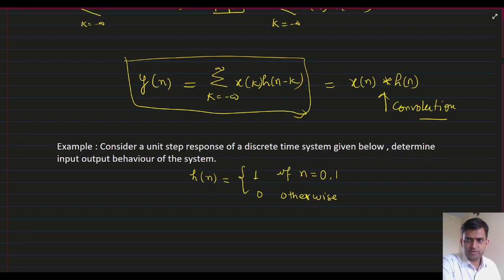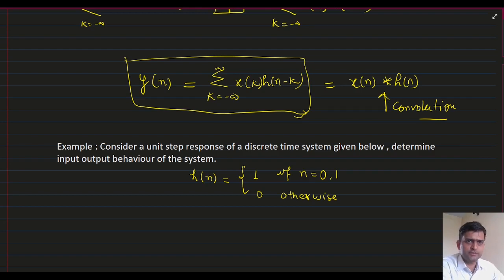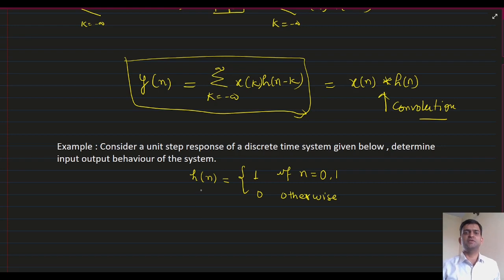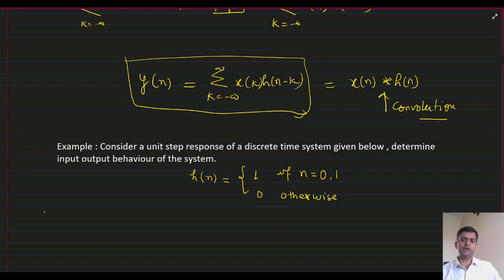Let us consider one example. If I have a unit step response of a discrete time system given, then we can calculate the relation between input and output. Here, the impulse response of the system is given as H(N) equal to 1, if N equal to 0 and 1, and 0 otherwise. How can we calculate the input-output relationship of the system?